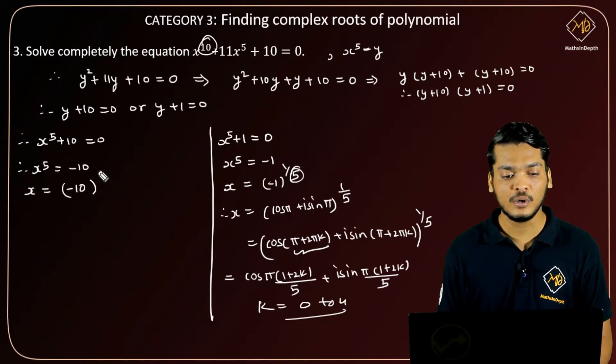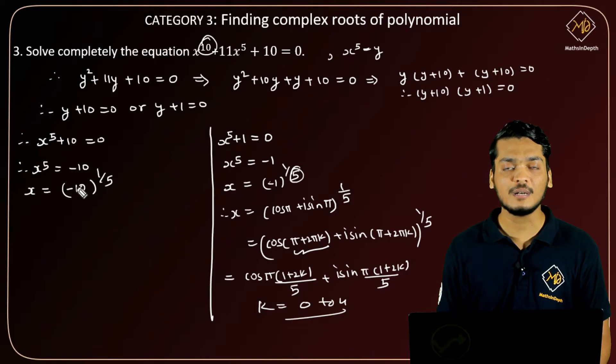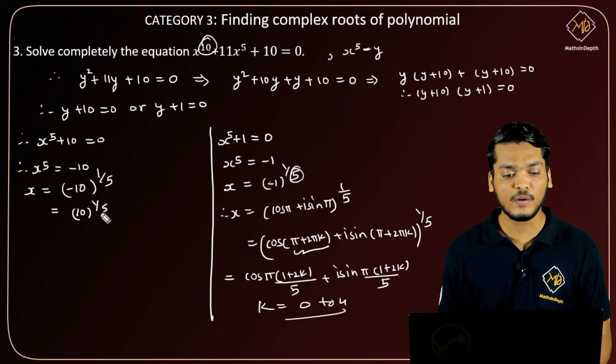Now for the other equation, if we take -10 to the right-hand side, we get (-10)^(1/5). When you have -10, you can split the minus 1, so we can have 10^(1/5) × (-1)^(1/5).